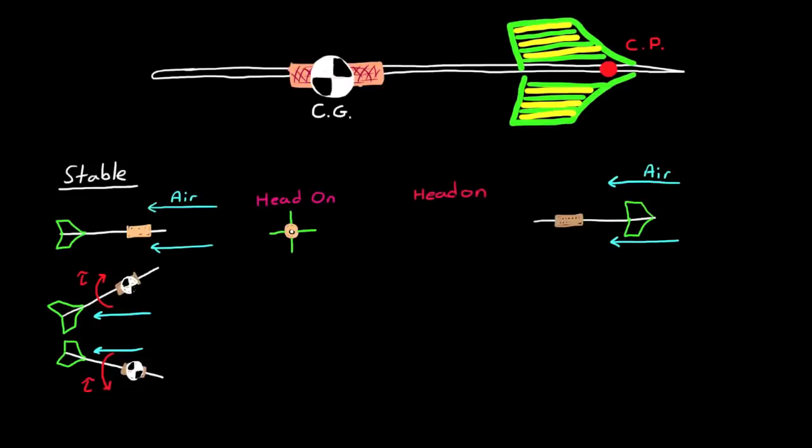The dart though still has an equilibrium point, and that's when the velocity vector is parallel to the dart. And you can still see this from the head-on view that shows that the flights are still lined up with the air currents. The difference comes, though, when the dart is disturbed off its equilibrium point.